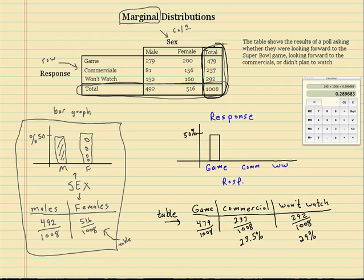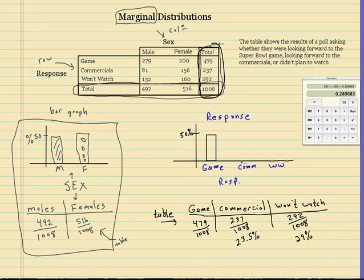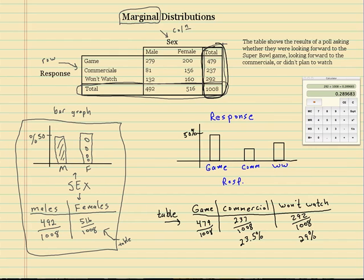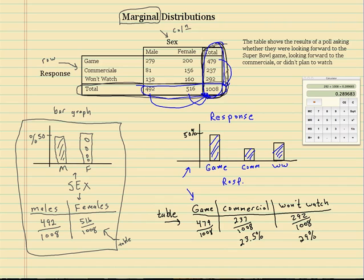So those are your two marginal distributions. Don't get confused — marginals are very, very simple. All they are is the row percent or the column percent. Each category's count divided by the total. The row totals correspond to the row marginal distribution, and the column totals correspond to the column marginal distribution. Thanks for watching.